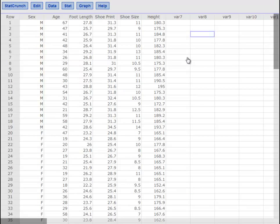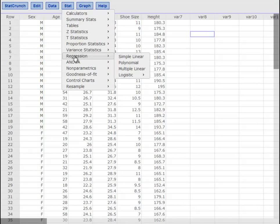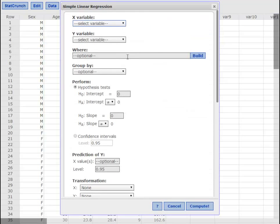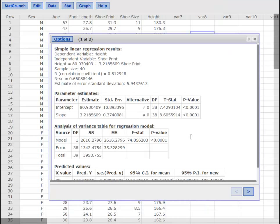To show you how it is done, it is very simple. Stat, regression, simple linear, just like before. Choose our y variable. In this case it was shoe print—shoe size gives it like 9, 10, 11, those types of things. Y variable is our height. Down here is where you do your prediction interval. So I'm going to predict somebody that has a shoe size of 29, and I want a 95% confidence interval. Compute. Make this a little bigger so we can see it all.